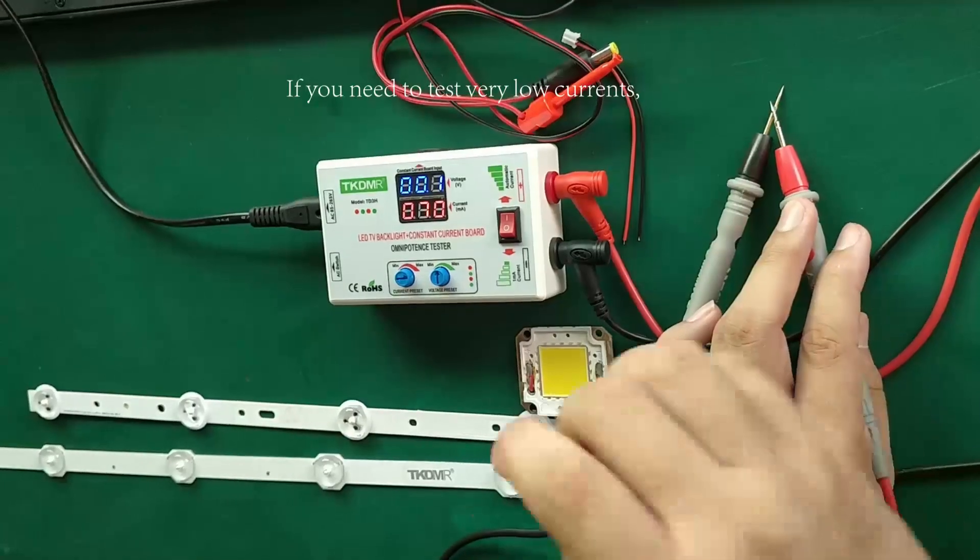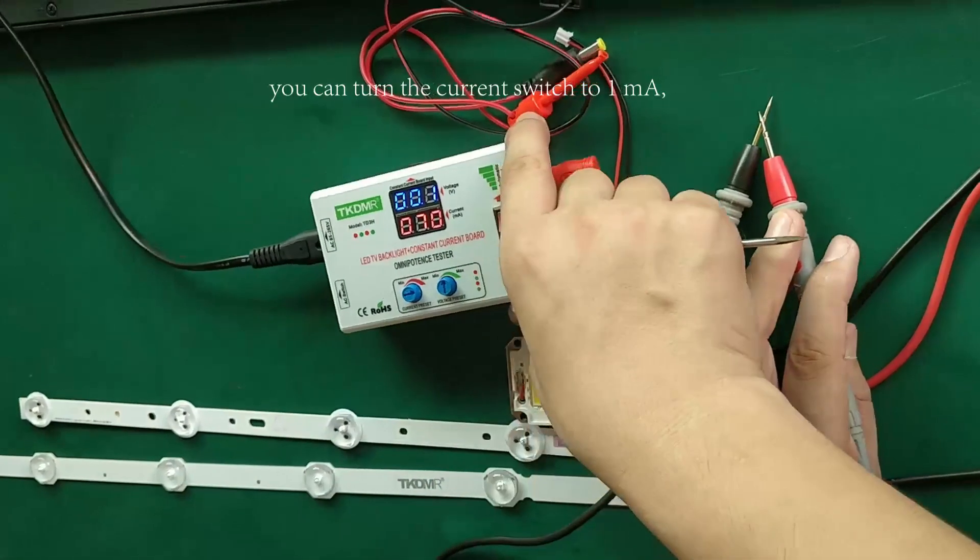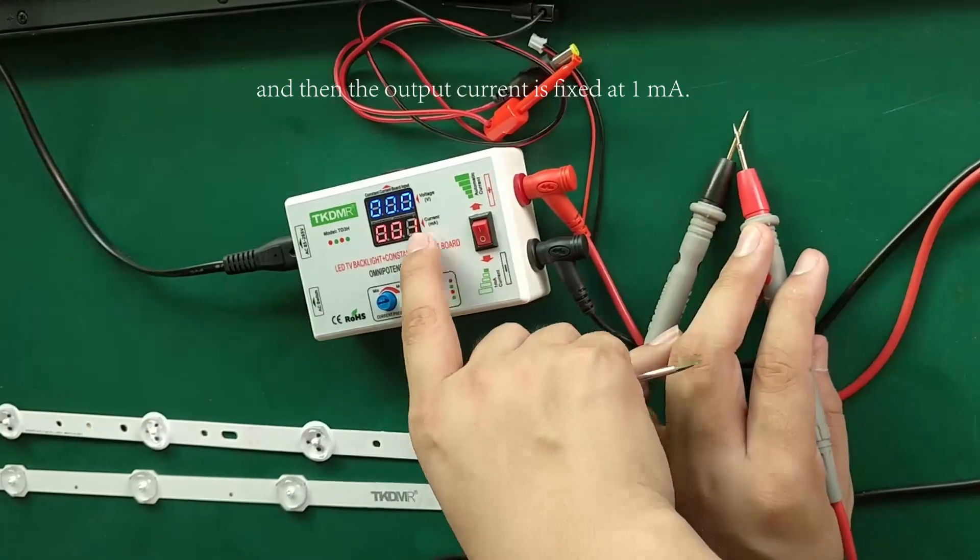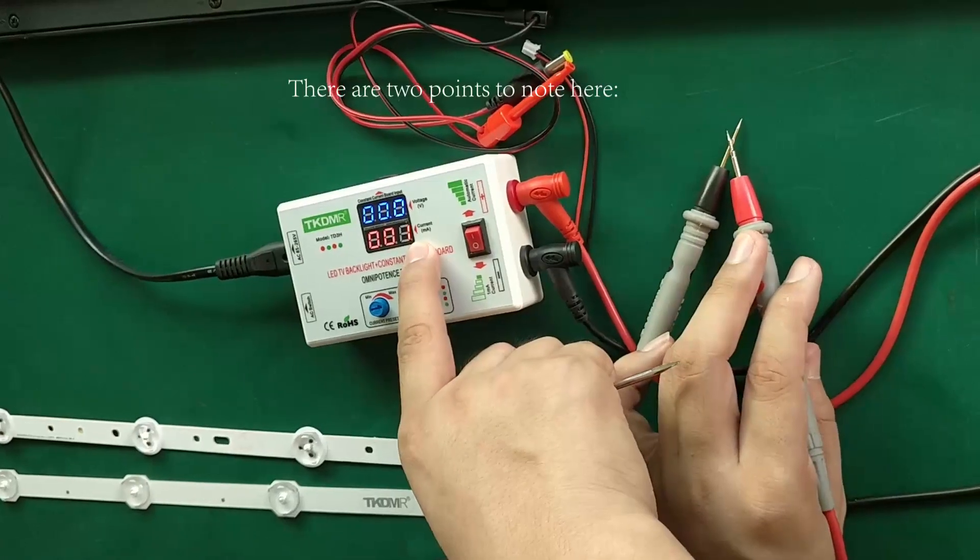If you need to test very low currents, you can turn the current switch to 1 milliampere and then the output current is fixed at 1 milliampere. There are two points to note here.